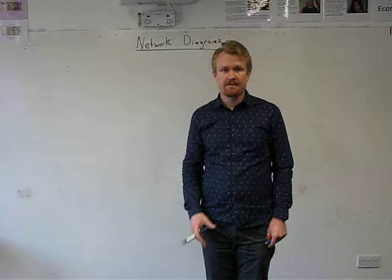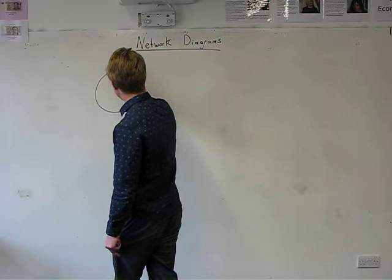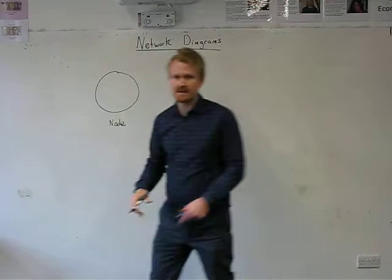And the first thing you need to know when you're looking at a network diagram is what all the lines and the circles mean. The first thing to understand is that you'll have a circle and the circle is what you could call a node. A node represents a point in time. It has no duration.